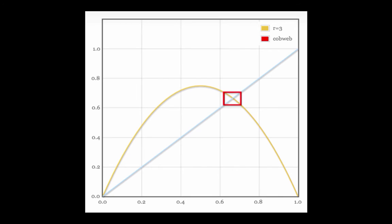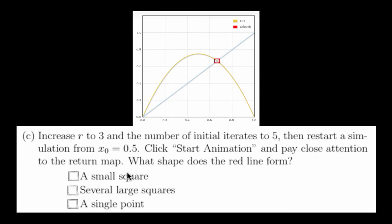As you can see, it does appear that the red lines are converging to something. At this point, it seems like the red lines have stopped changing and have converged to a small square.